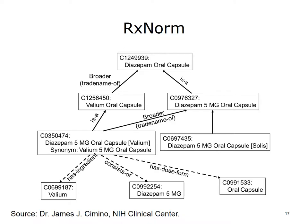This slide illustrates the components and relationships that make up RxNorm. It is likely that RxNorm will become the preferred coding scheme for drugs in the U.S. It includes ingredients, composition, form, dosages, packaging, generic name, and brand name. For example, C0350474 is diazepam 5 mg oral capsule, has ingredient C0699187 (Valium), and consists of C0992254, diazepam 5 mg.